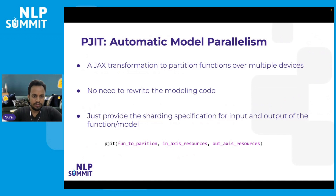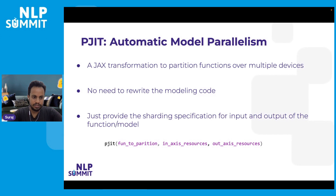To do tensor parallelism using JAX, we use something called pjit. pjit is a JAX transformation that can automatically transform your functions and partition them so they can run on multiple devices. The big advantage of pjit is that as a model author, you write your modeling code as if it's running on a single device, and then let pjit take care of sharding it across multiple devices and multiple hosts. You just provide pjit with your function, specify sharding annotations — which indicate where to shard each parameter tensor along what mesh axis — for your input parameters and output values, and pjit lowers your function to an XLA computation and shards it across multiple devices.